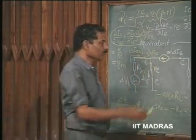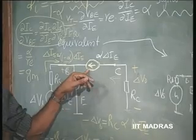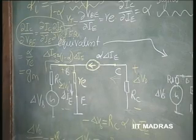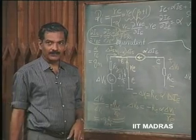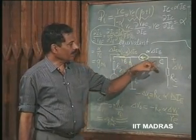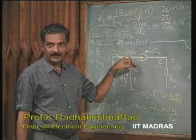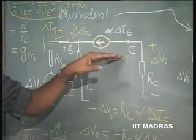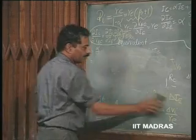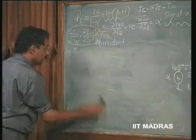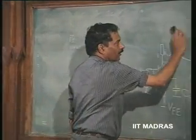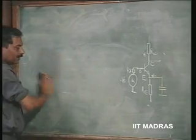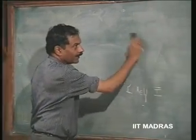The output impedance: since there is an ideal current source at the output, the output impedance is infinity in this case. If there is a leakage resistance between collector and base, there will be finite output impedance. So the key results for the common emitter amplifier are: input impedance equals re divided by 1 minus alpha, or re times 1 plus beta; and gain equals minus GM times RC. Let us now take an example to illustrate this.